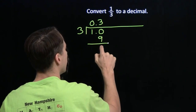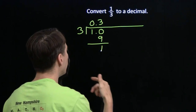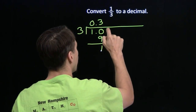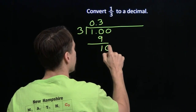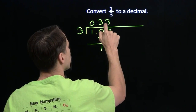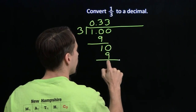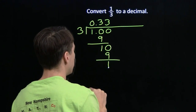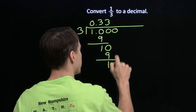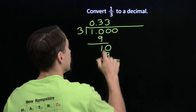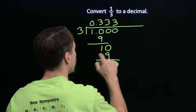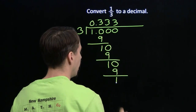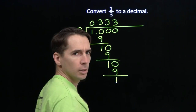3 times 3 is 9, so we're going to have 1 of these tenths left over. 3 doesn't go into 1 — we're going to need hundredths. Bring down the 0. 3 into 10 goes 3 times and leaves us 1 left over. 3 doesn't go into 1 — we need another 0, we need a thousandths place. 3 into 10 goes 3 times, and we have 1 left over.